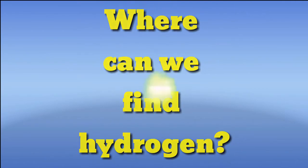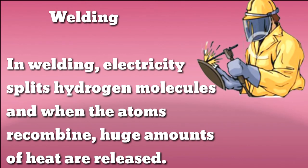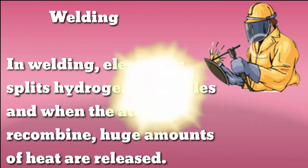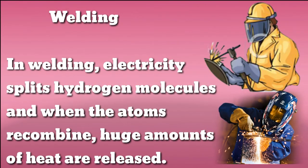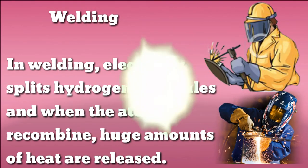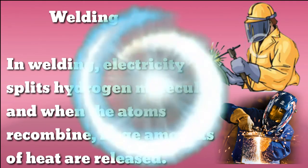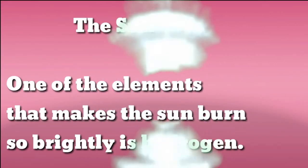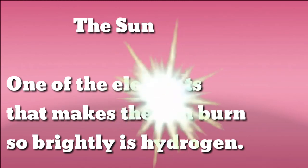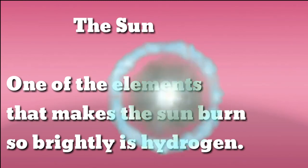Where can we find hydrogen? In welding, electricity splits hydrogen molecules, and when the atoms recombine, huge amounts of heat are released. The sun: one of the elements that makes the sun burn so brightly is hydrogen.